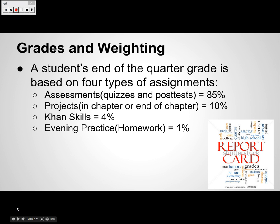Grades and weighting: a student's end-of-quarter grade is based on four types of assignments. Assessments — quizzes and post-tests — account for 85% of your child's grade. Projects, in-chapter or end-of-chapter, comprise 10%. Con skills, which you see almost daily, are 4%. And evening practice — usually packet pages — is 1% of the grade.